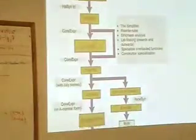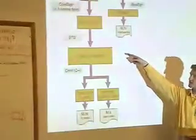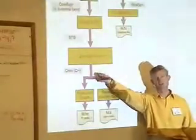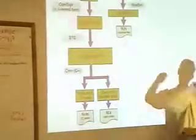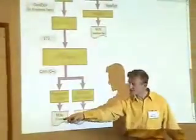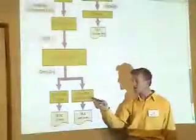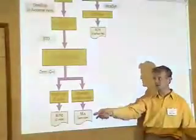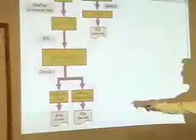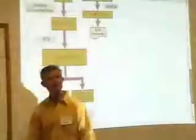From the STG language it goes to the code generator, which is a rather big complicated class. This is the point at which we get C-minus-minus — not in its textual form, but as a data type called the CMM data type, which is then either output in C syntax via a pretty printer, or fed into the native code generator which generates native code. There's also a -fCMM flag which pretty prints it out.